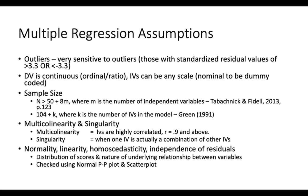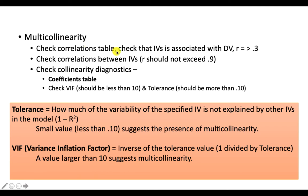Same as simple linear regression, we also need to check for normality, linearity, homoscedasticity, and independence of residuals. For multicollinearity, check the correlations table: the IV should correlate with the DV at R greater than 0.3, and correlations between IVs should not exceed 0.9. You can also check collinearity diagnostics in the coefficients table — the VIF needs to be less than 10, and tolerance should be more than 0.1. Tolerance reflects how much variability in a given IV is not explained by other IVs; small values suggest multicollinearity. VIF is the inverse of tolerance, so a value larger than 10 suggests multicollinearity.